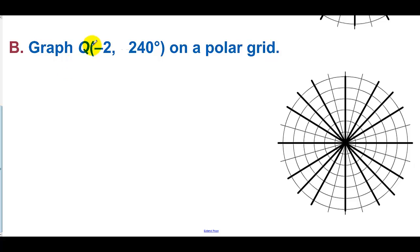For letter B, graph (-2, 240°) on a polar grid. We go to the second circle, then go to 240 degrees — that's 180 plus another 60. That location at 240° would normally be (2, 240°), but since r is negative, we go in the opposite direction. So point Q is plotted in the opposite direction.